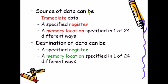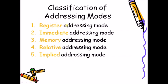The source of data can be immediate data, data present inside a register, or data in a memory location. The destination can be a register or a memory location. The different types of addressing modes supported by the 8086 processor are: register addressing mode, immediate addressing mode, memory addressing mode, relative addressing mode, and implied addressing mode.